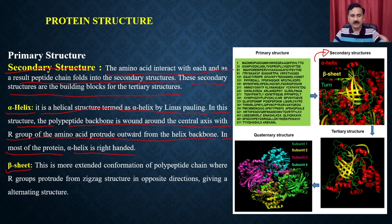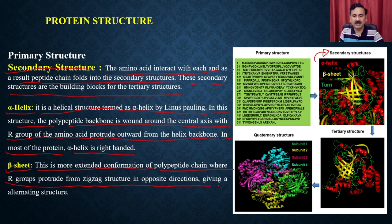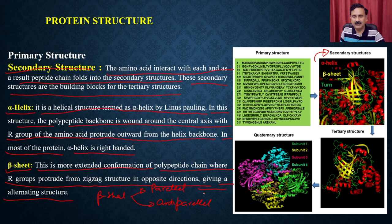Beta sheets represent a more extended conformation of the polypeptide chain, where the R groups protrude from a zigzag structure in opposite directions, giving an alternating structure. Beta sheets can be of two types: parallel beta sheets or anti-parallel beta sheets. In parallel beta sheets, the strands run in the same direction; in anti-parallel beta sheets, they run in the opposite direction.